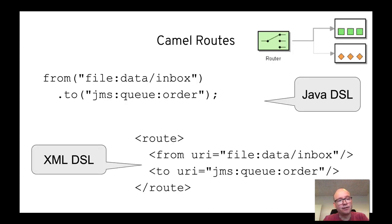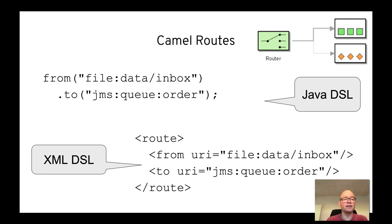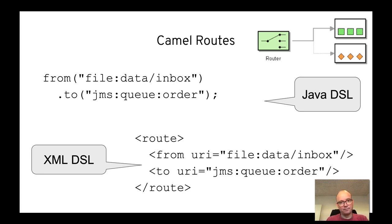Speaking of routes, here are two examples. A very simple one is just a straight one-to-one integration between a file and a JMS queue. In Java code you just say from file to JMS, and in XML you can do the same. At runtime it doesn't matter to Camel — it becomes the same on load.